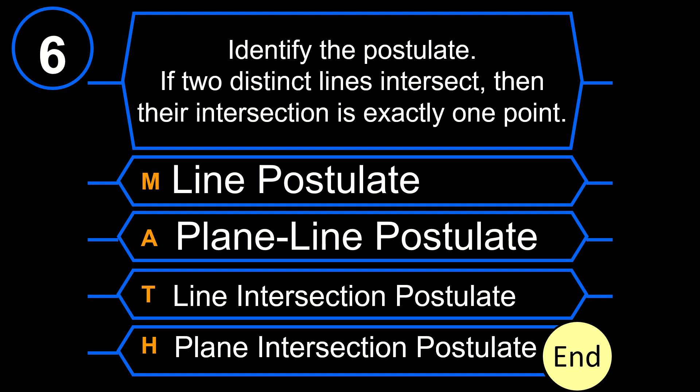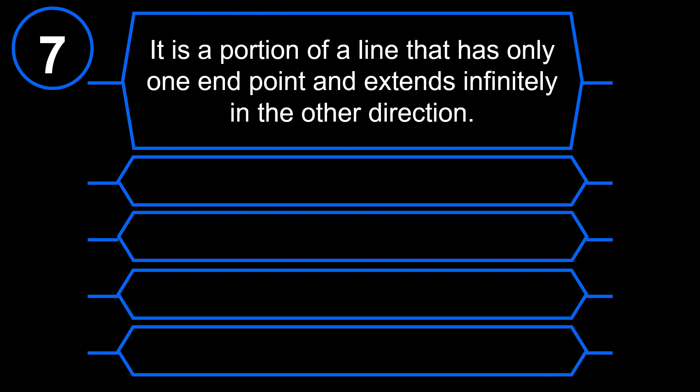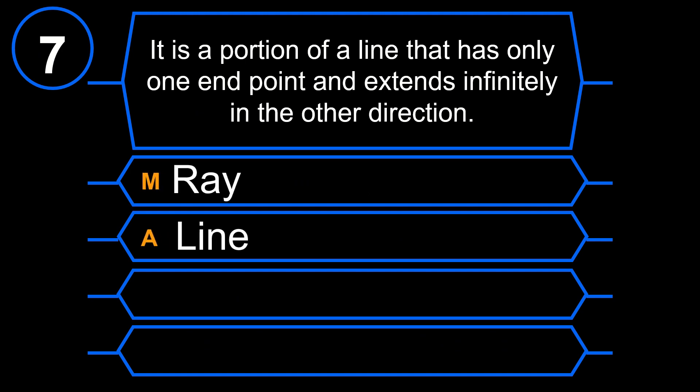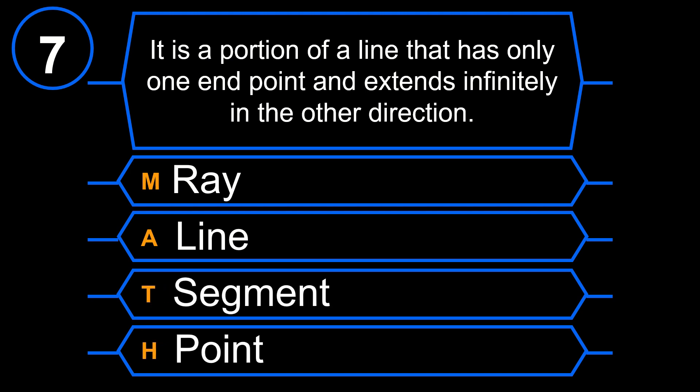Wow! You're doing great! Let's proceed to question number 7: It is a portion of a line that has only one endpoint and extends infinitely in the other direction. M. Ray. A. Line. T. Segment. H. Point.